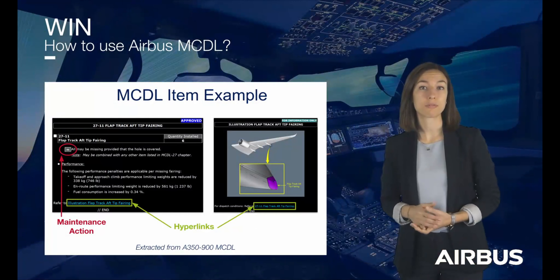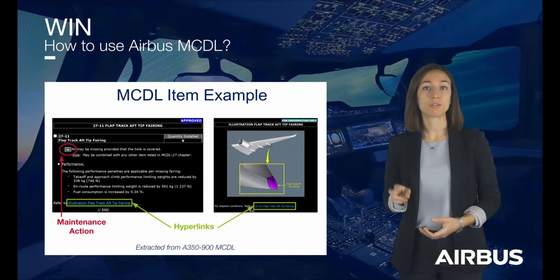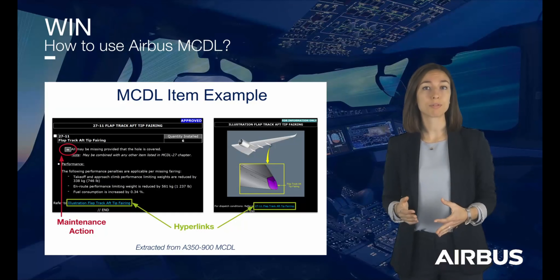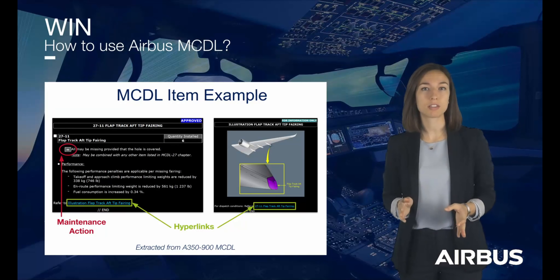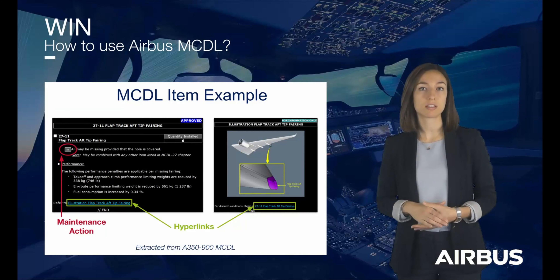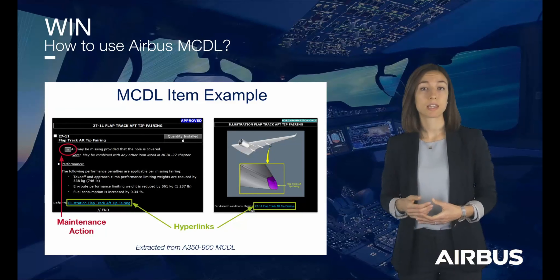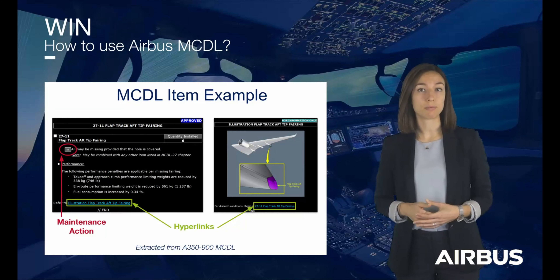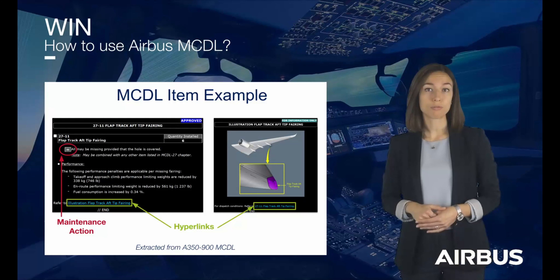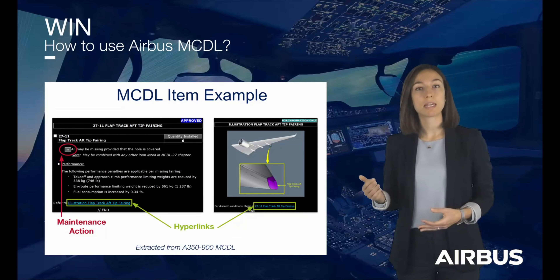Regardless of the Airbus aircraft type, each MCDL item is divided into two display units. Keep in mind that the illustrations included in the MCDL are provided only for information to help with the location of the missing items and must not be considered as approved data. The letter M associated with an item indicates that a maintenance action is necessary to permit the flight with this part missing. The MCDL maintenance procedures are published in the AMM or LMM depending on the Airbus aircraft type. Also, remember that the MCDL item number may be used to find the associated tasks in the maintenance manual.